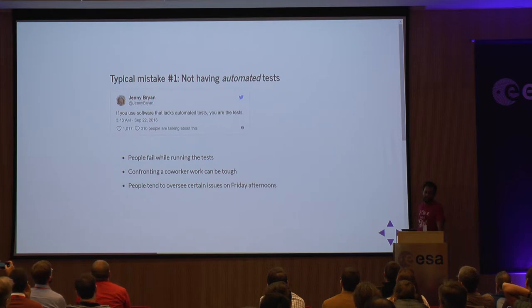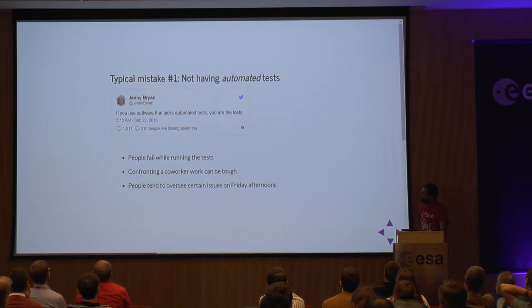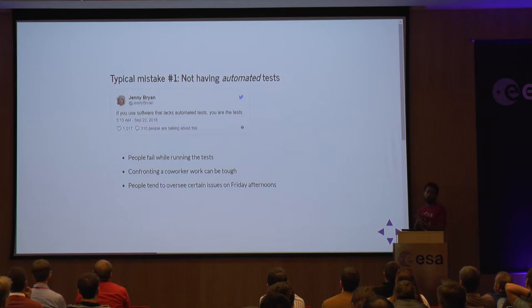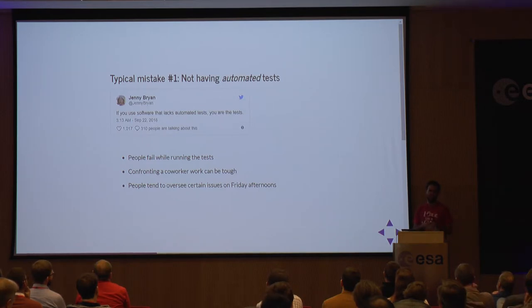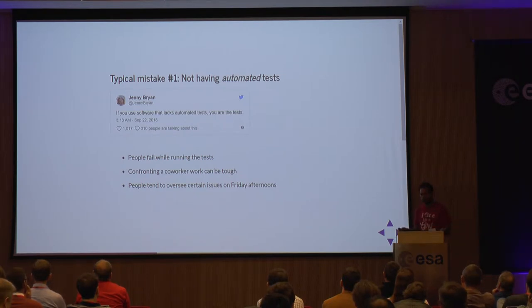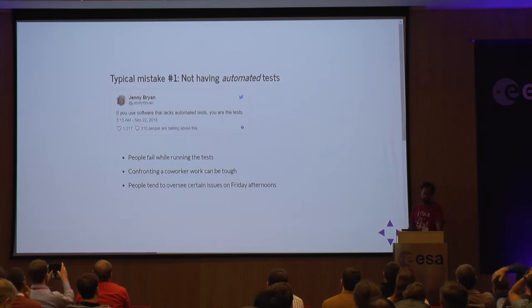Typical mistake number one is not having automated tests. I found this tweet that says: if you use software that lacks automated tests, then you are the tests. People fail running tests. Confronting a co-worker can be tough — maybe it's your boss, or it's late Friday and you don't want to spend more hours fixing it. There are lots of human factors in testing that prevent proper investigation. We should try to automate everything, including running the tests, as much as possible.